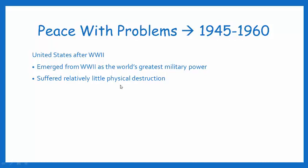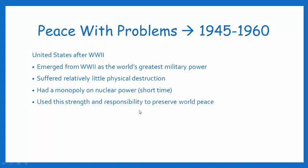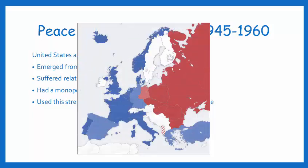We suffered relatively little physical destruction since the majority of the war was fought over in Europe. We also had a monopoly on nuclear power for a very short time — we were the only nation that had a nuclear weapon, though the Soviet Union would get into that game very fast. We used that strength and responsibility to preserve world peace by getting involved in the United Nations, unlike after World War I when we did not join the League of Nations. You'll see the communist versus non-communist parts of the world on the map.